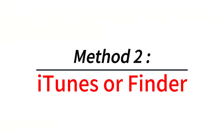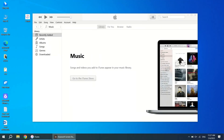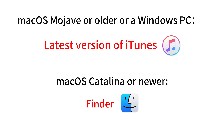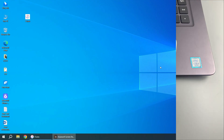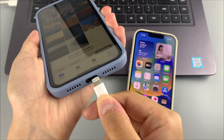Method two: iTunes or Finder. You can transfer photos from iPhone to iPhone using iTunes or Finder. If you have macOS Mojave or older, or a Windows PC, use the latest version of iTunes. For macOS Catalina or newer, you should use Finder.